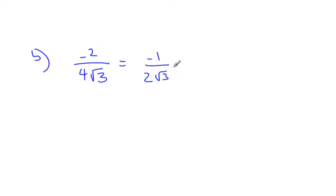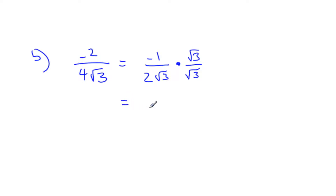Now, to do my rationalizing, what am I going to multiply by? Well, 1 again — so we do root 3 over root 3. My denominator is 2 root 3 — why do I ignore the 2? Well, all we're trying to do is rationalize it, make it a whole number. So if we do root 3 times root 3 we'll get 3, and then 3 times 2 will be rational.